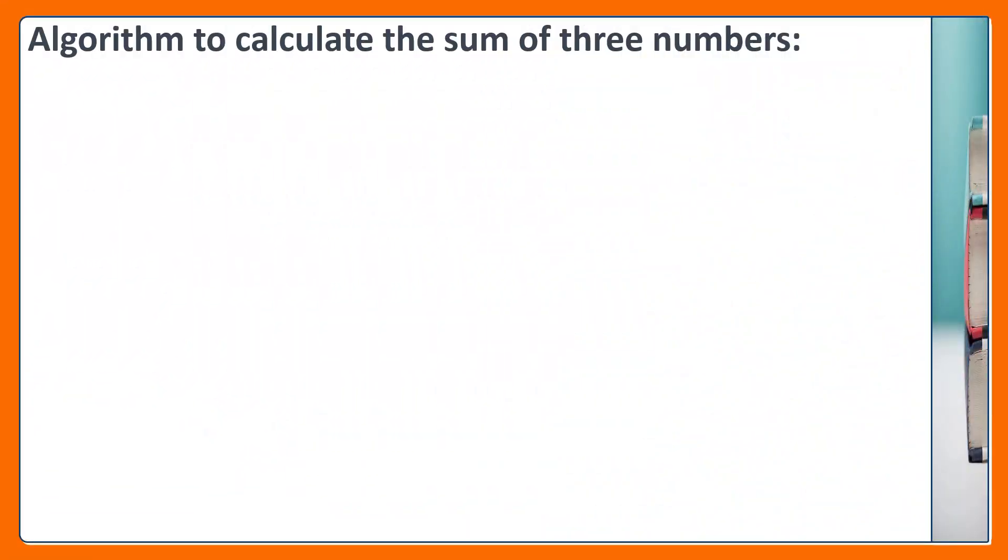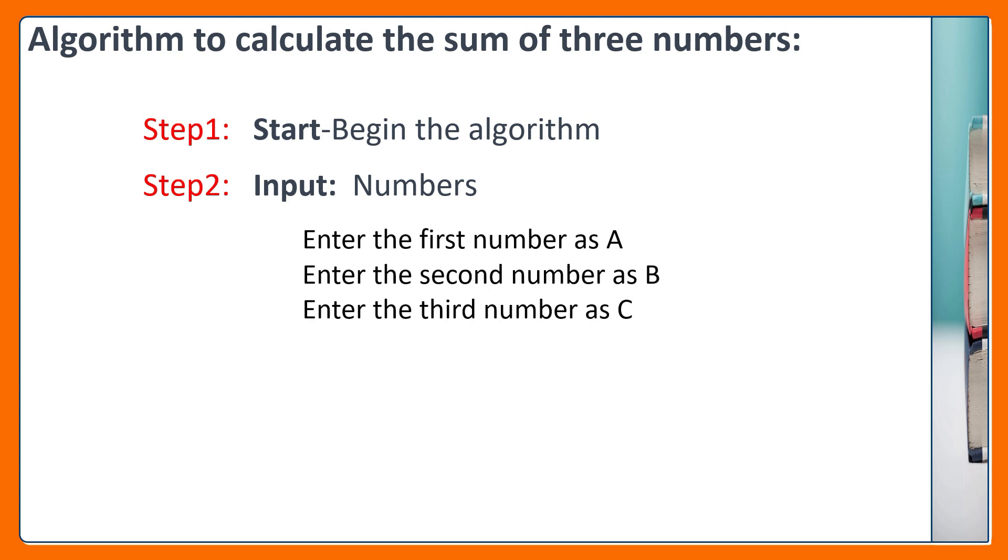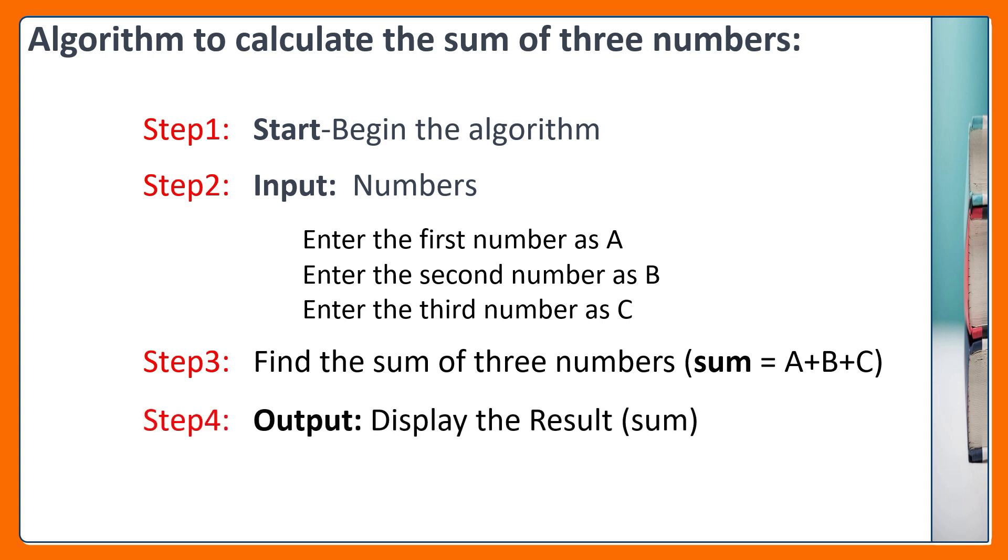Let us see an algorithm for the mathematical problem to get the sum of three numbers. So the first step is start. Start the algorithm. Next step, input the numbers as A, B and C. Step 3, find the sum of three numbers which is A plus B plus C. Now, just display the result. And the final step is end the algorithm.